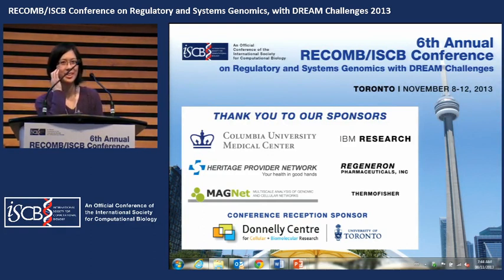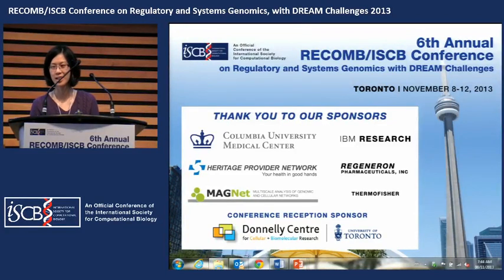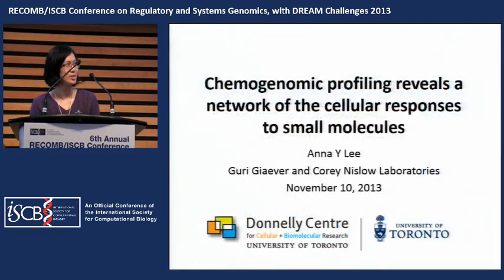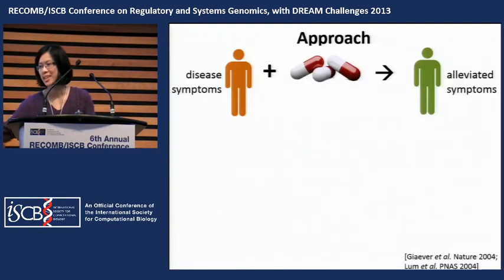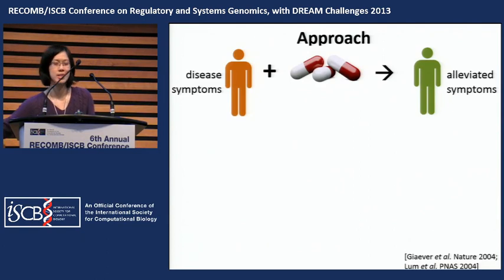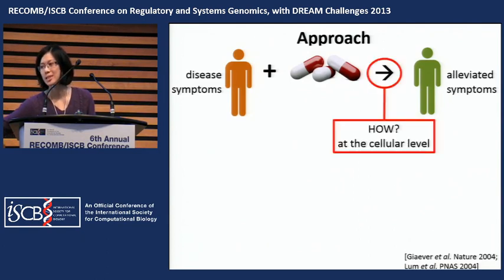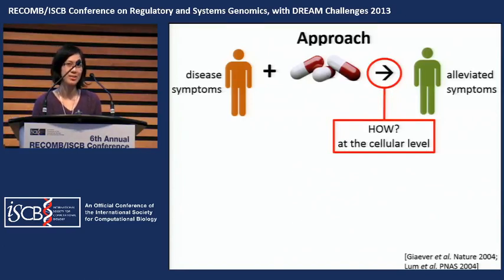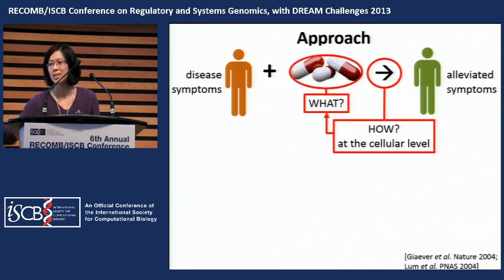I want to start by thanking the organizers for giving me this opportunity to describe our work. One of our main goals overall is to better understand how, when an individual has disease symptoms and is treated with a drug, how the symptoms become alleviated. By having a better understanding of how this works at the cellular level, we hope to predict drugs that are both efficacious and safe.